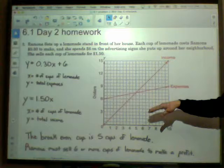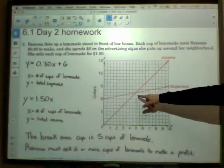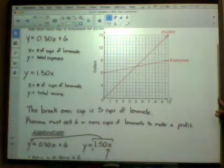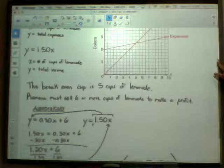You can see in the graph that the expenses are growing more slowly than income. The expenses start out - they call it starting out in the red where you owe more money or have more expenses than you have income. Then pretty soon they max out. We call that the breaking point right here at five, and the break-even point is at five cups, meaning Ramona has to sell six or more cups of lemonade to make a profit.